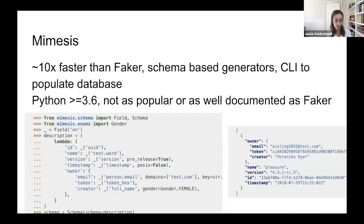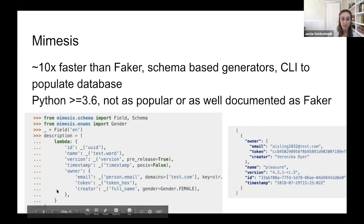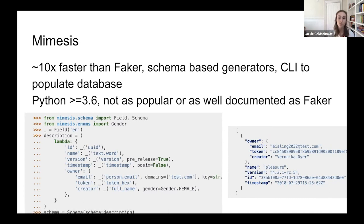The next fake data generator is Mimesis, which is about 10 times faster than Faker — that's its major claim to fame. If performance and speed of your tests are very important, Mimesis might be a better choice. It also allows schema-based generators, so you can define your generator through a mapping rather than in code, and it will generate data that conforms to that schema. There's also a CLI in Mimesis that allows you to populate a database using Flask. Downsides: it only supports Python 3.6 or greater and is not as popular or as well documented as Faker.